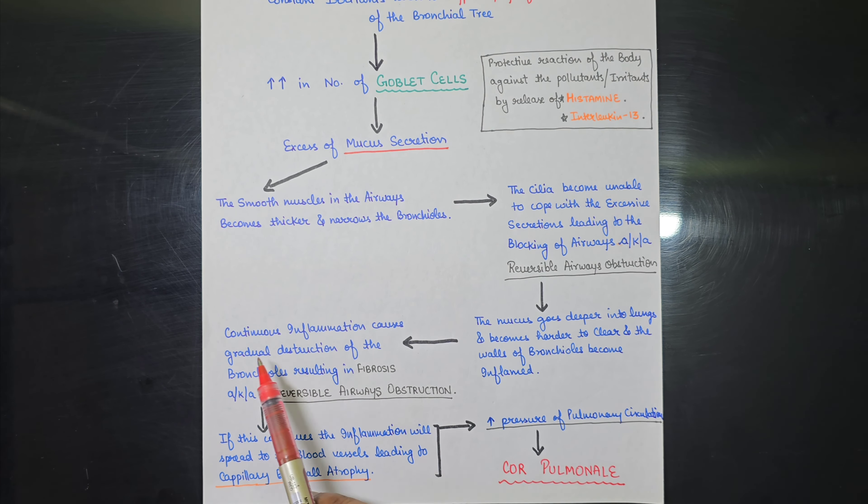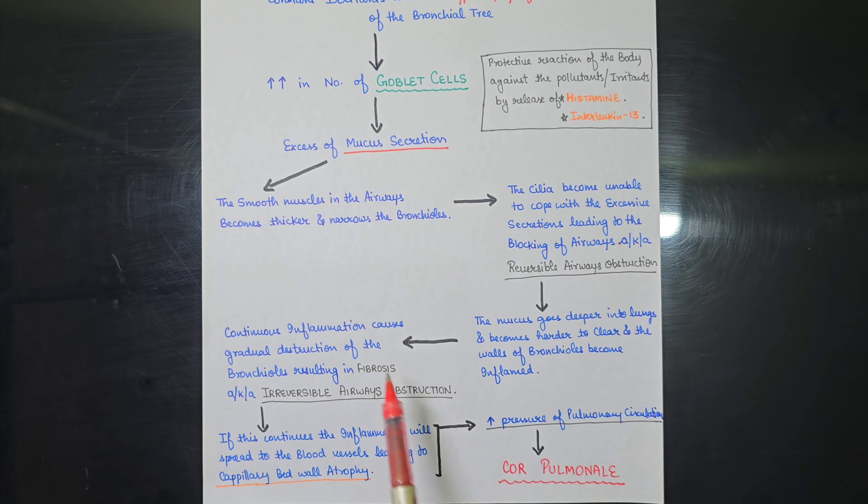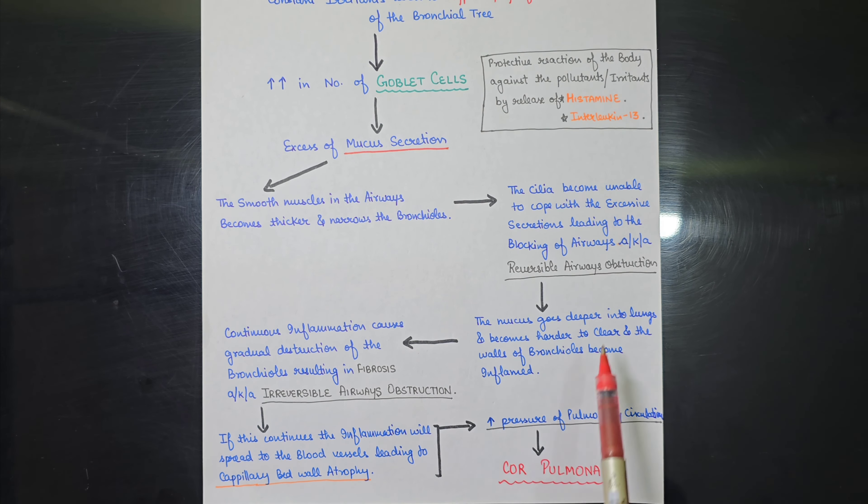Whenever the inflammation will start, the continuous inflammation causes gradual destruction of the bronchioles. The continuous inflammation will lead to the destruction of the bronchioles that will result in fibrosis. It is also known as irreversible airways obstruction.